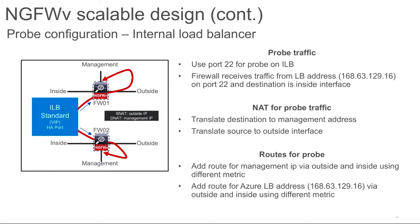Probes are really important because the load balancers use probes to monitor your firewalls. For this design, we suggest using port 22. We are not only probing the firewall — we are probing through the firewall. Any traffic you see on the firewall coming from the 168.63.129.16 address is the well-known IP address of the Azure load balancer. That traffic hitting the inside interface of the firewall on port 22